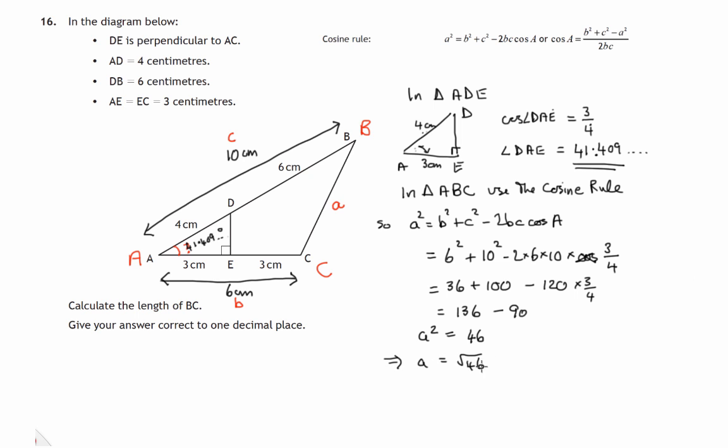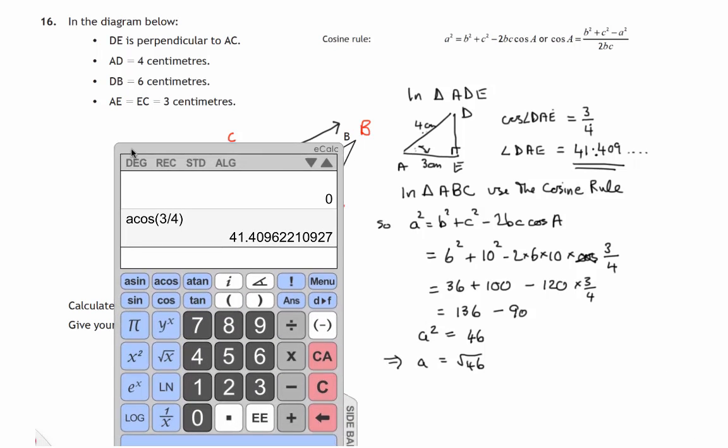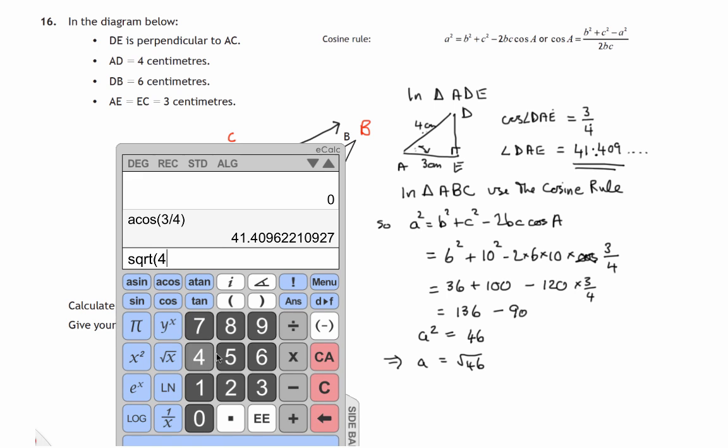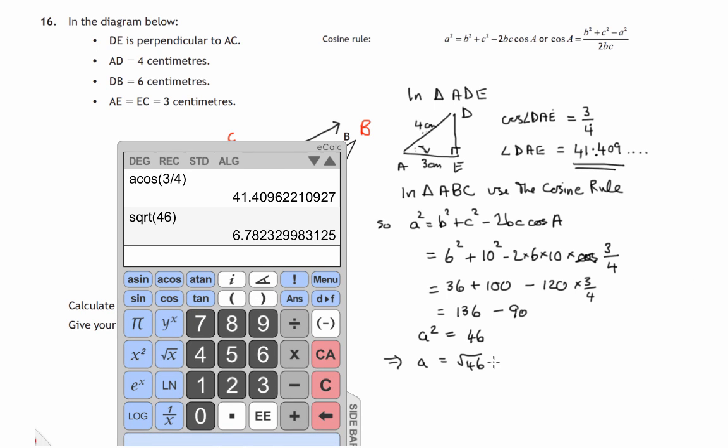And that I think we'll need our calculator for. So the square root of 46 is 6.78 and so on. So that equals 6.782 and so on.